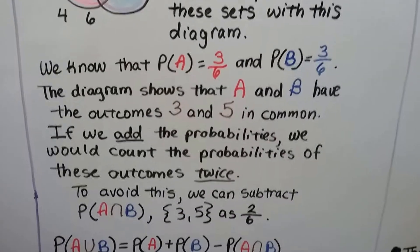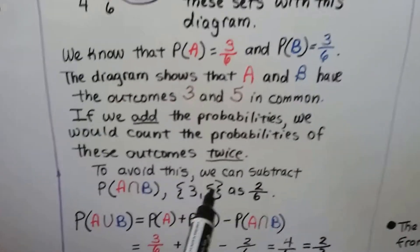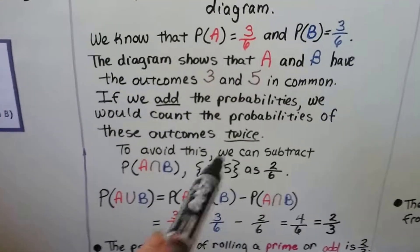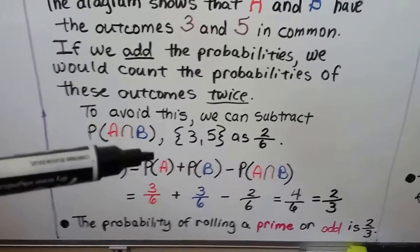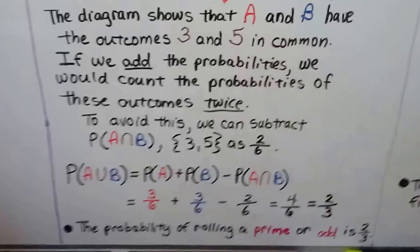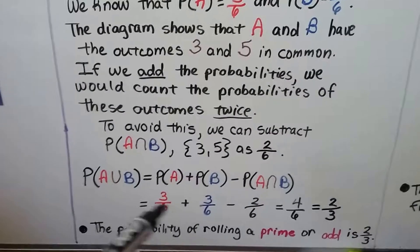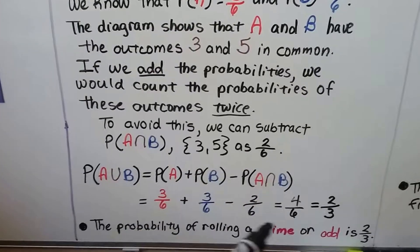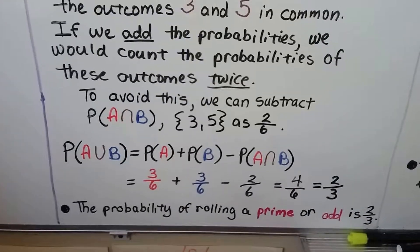To avoid double-counting, we subtract the probability of A intersect B. The intersection is {3, 5} — two numbers out of 6, so it's 2/6. So the probability of A union B equals 3/6 plus 3/6 minus 2/6, which gives us 4/6, or 2/3 when simplified. The probability of rolling a prime or odd is 2/3.